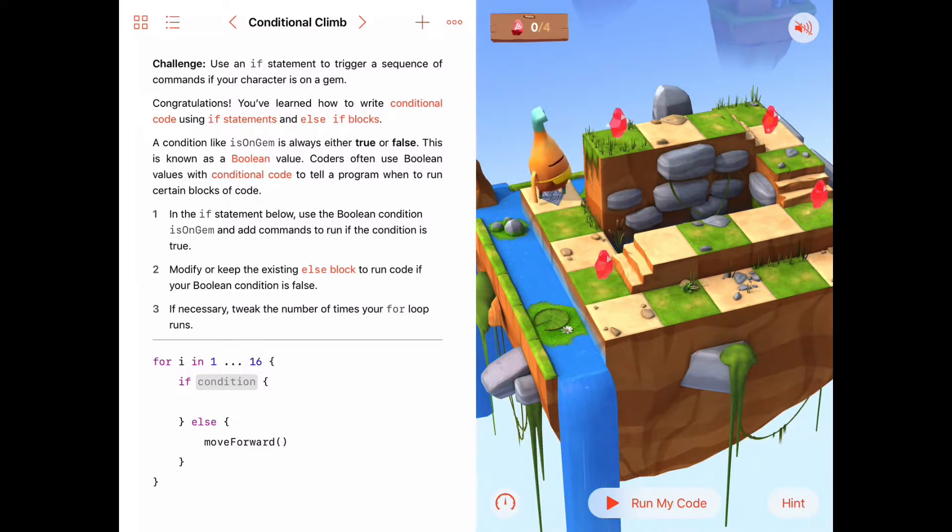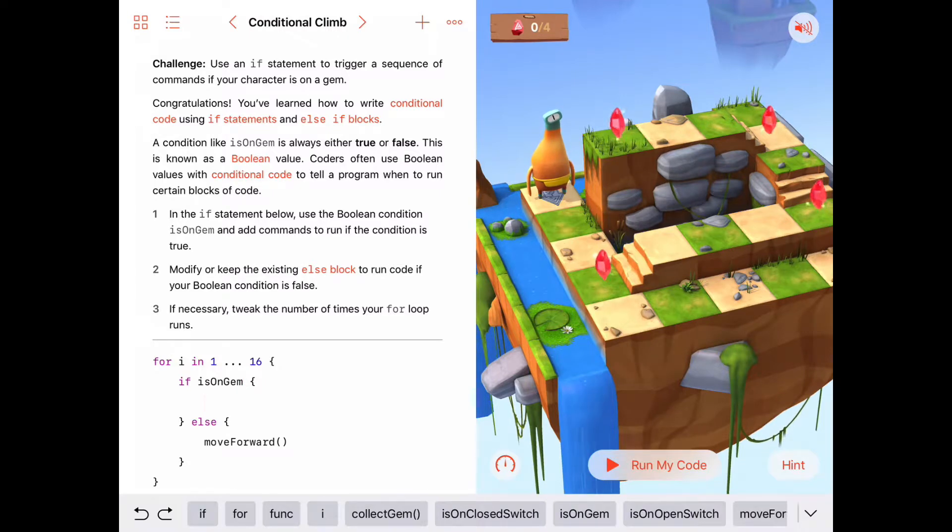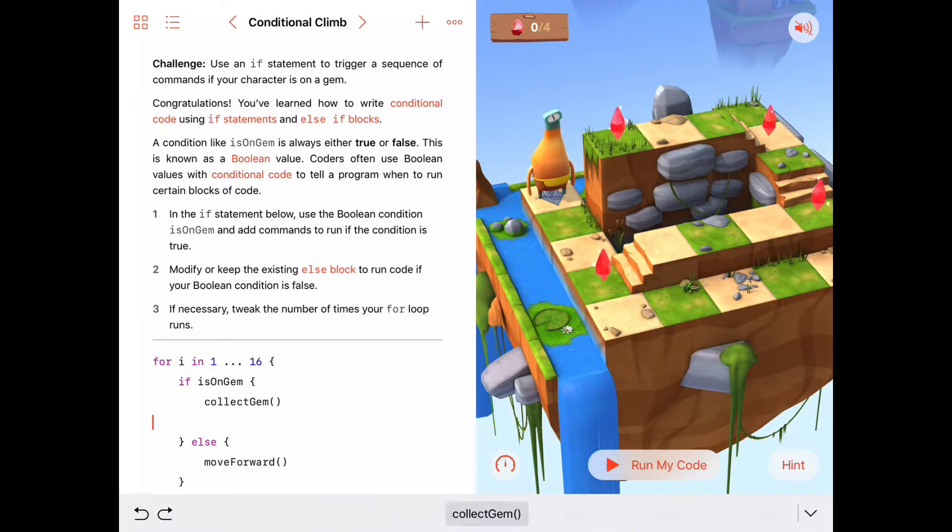All right, with that in mind, let's just think about what Byte wants to do when he reaches a gem. So let's go ahead and make this condition here. If Byte reaches a gem, we're going to say if Byte is on gem, then what thing or things do we want to do? Well, just like always, we for sure want to collect the gem.